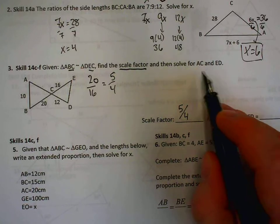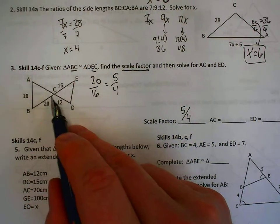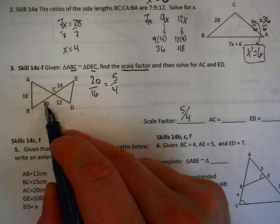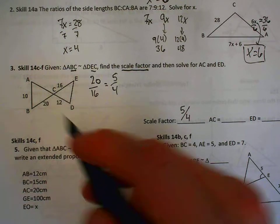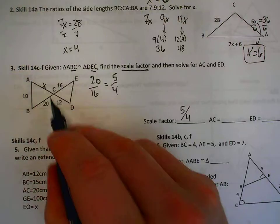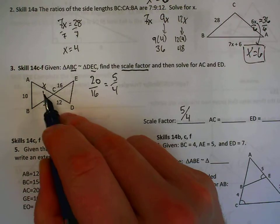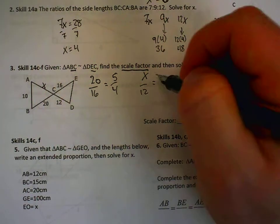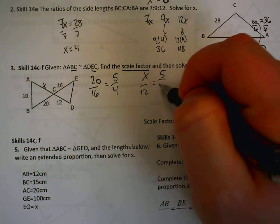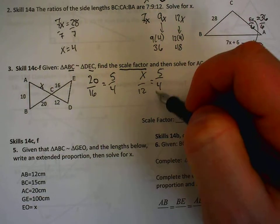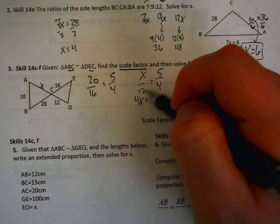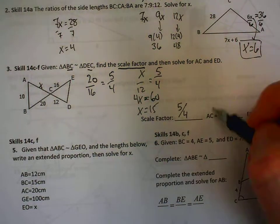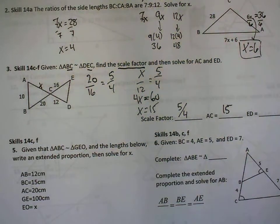Now, we have to solve for AC and ED. AC is this side of the triangle on the left. I know that 20 and 16 go together, so we'll call this one x. This side has to go to the 12, so x over 12 has to equal my scale factor of 5 fourths. Cross multiply. That would give us 4x. 12 times 5 would be 60. Divide by 4, and that gives us our x value of 15, which is AC.